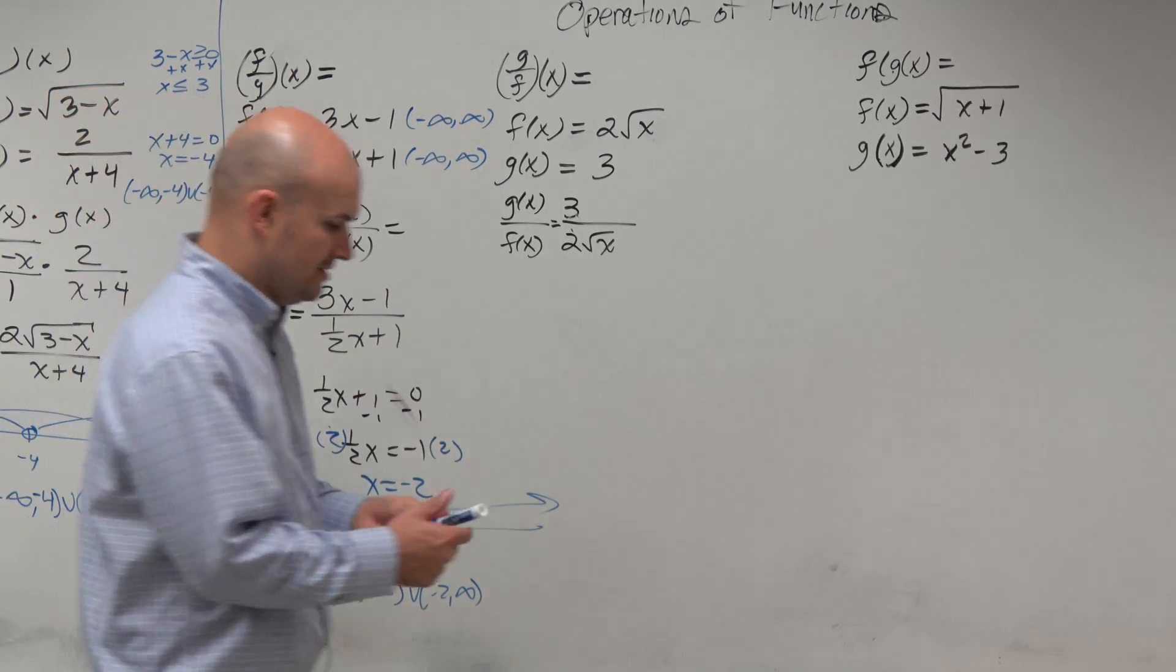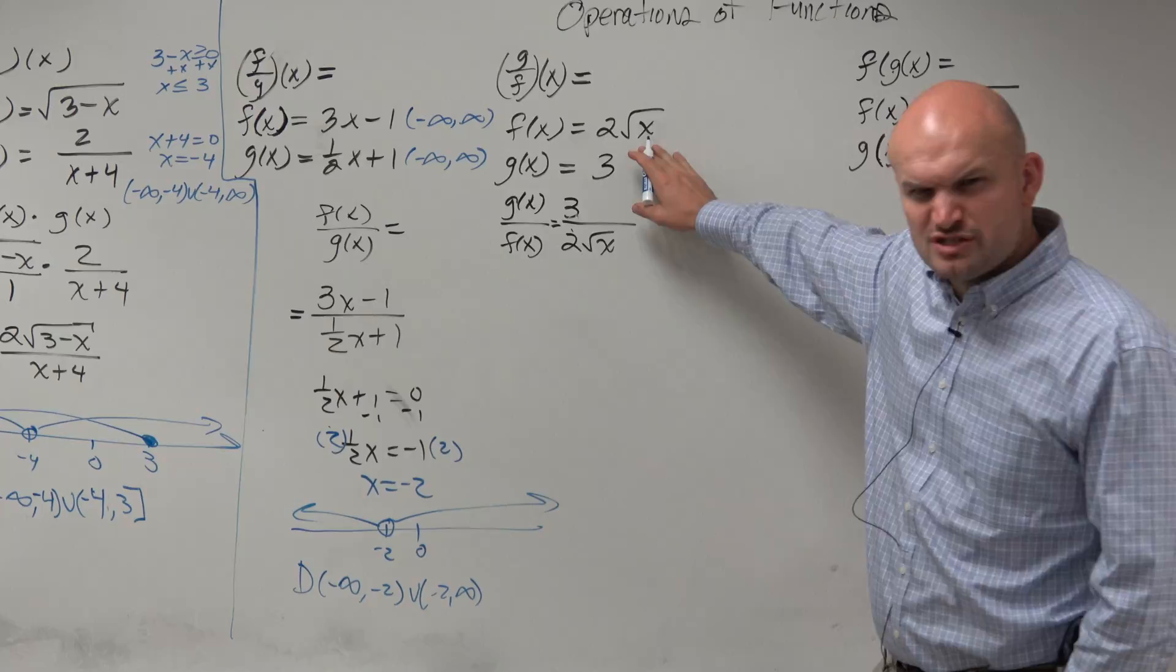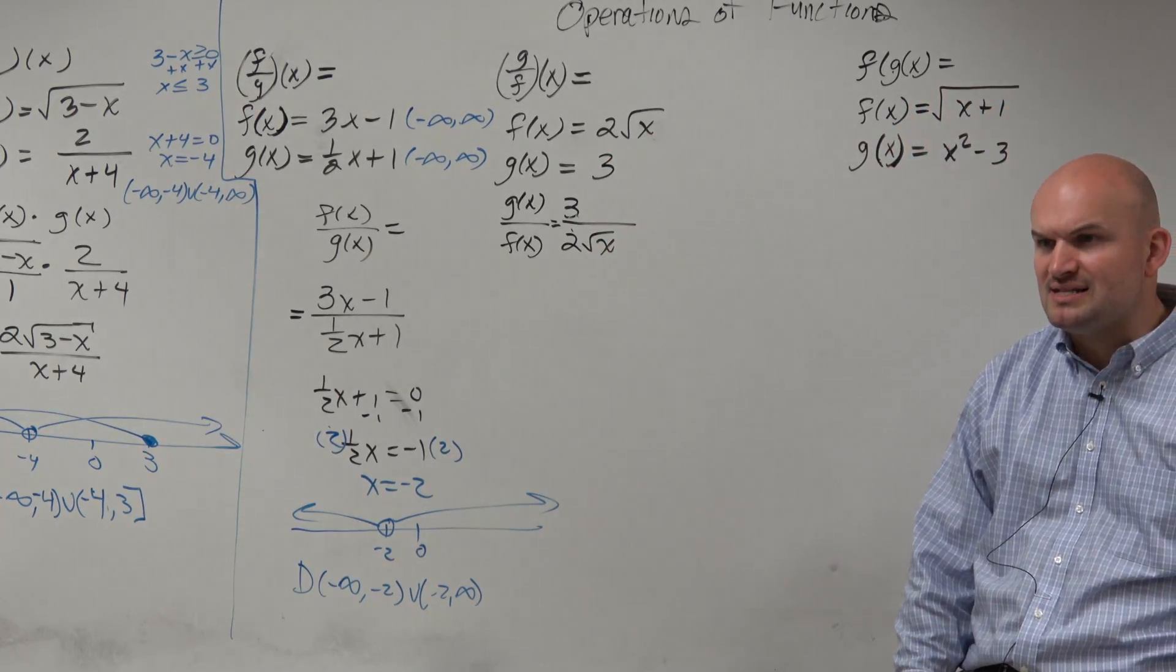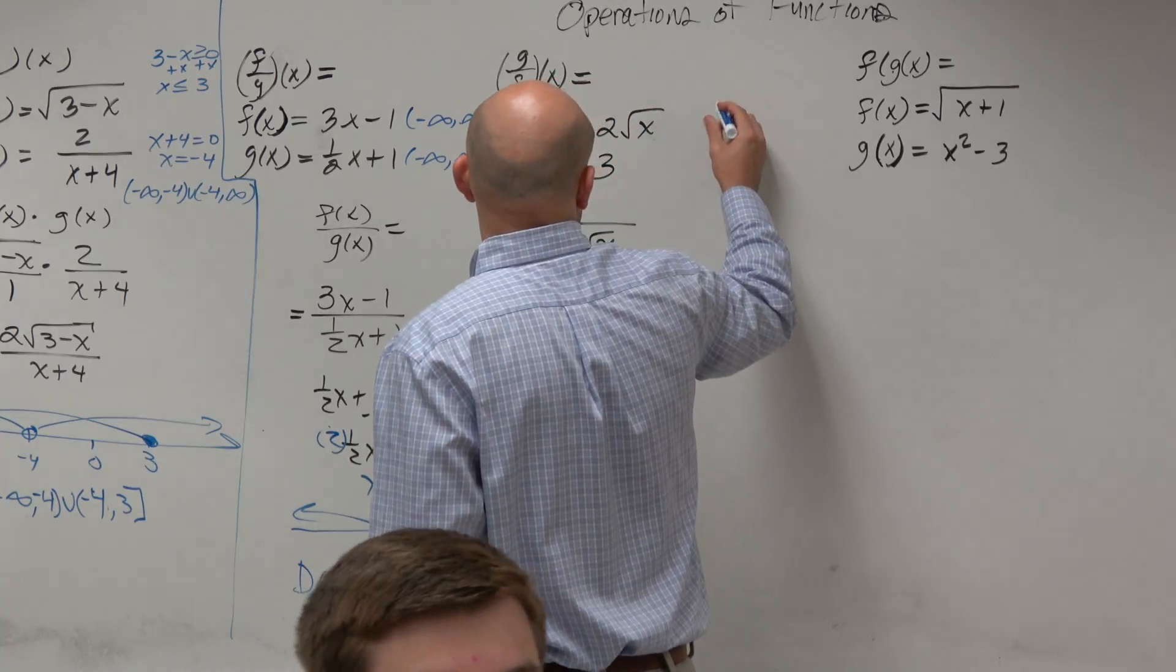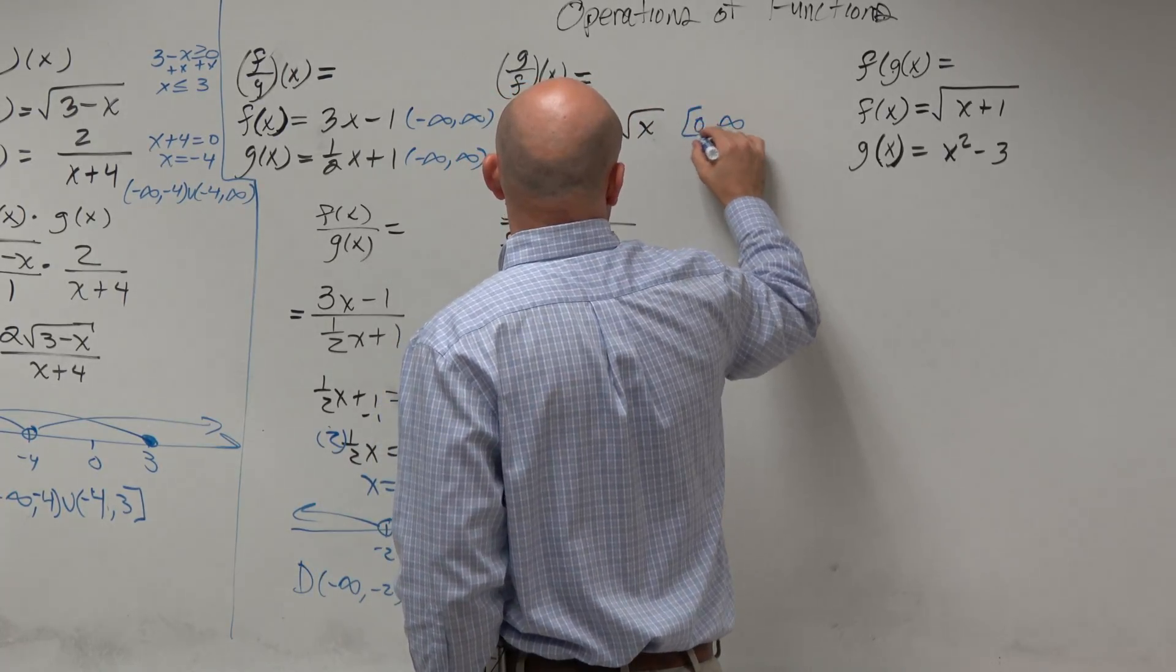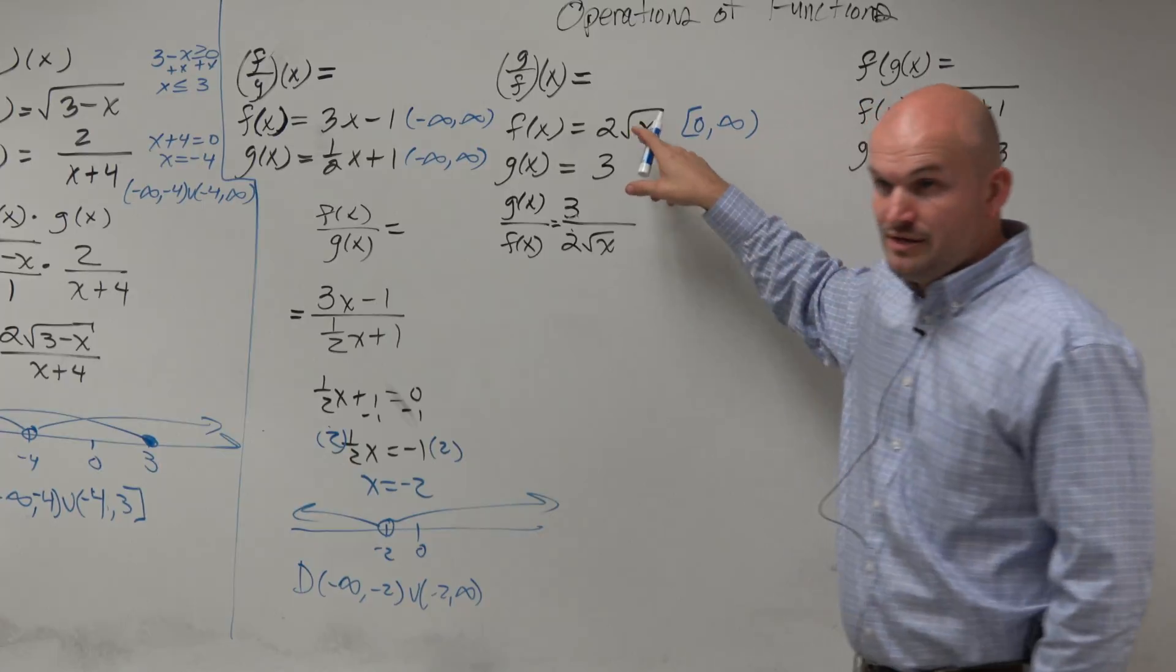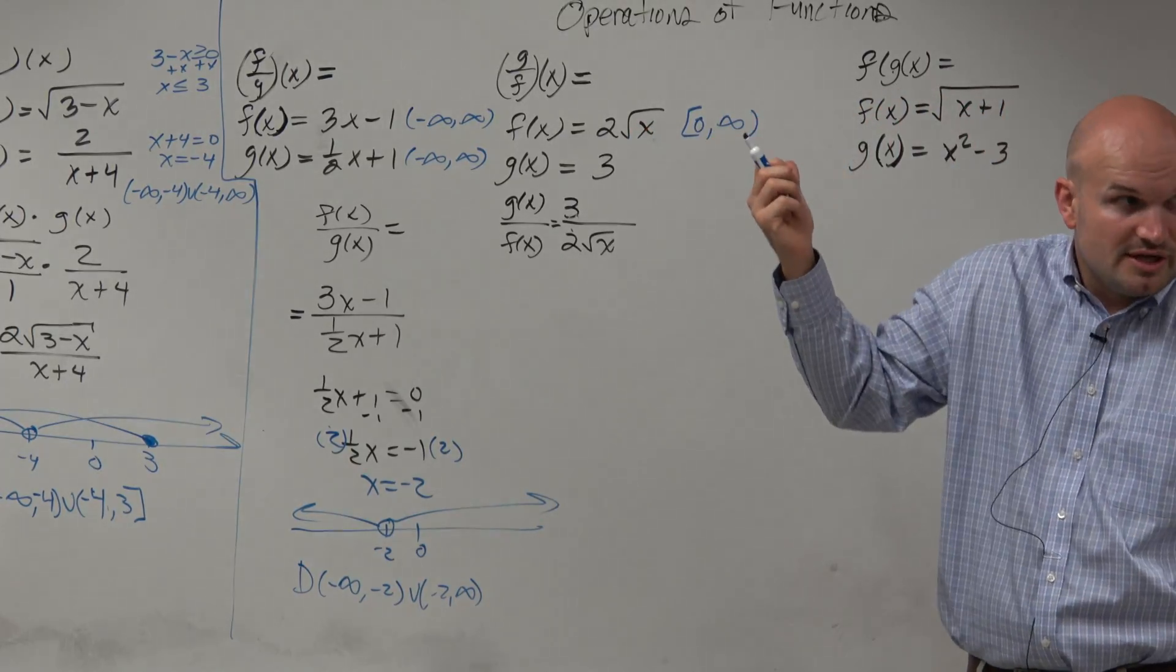My main point is, what's the domain? So hopefully, you guys understand here, just taking the square root of x, that means it has to be all positive numbers, right? All numbers greater than 0. So that's going to be from 0 to infinity. Now, 0 is OK here, right? You can take the square root of 0. 0 is good. It's fine.